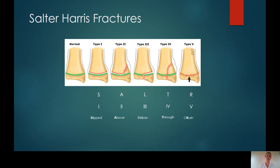Type 3, L, is a fracture that occurs below the growth plate involving the epiphysis. A type 4 fracture sees the fracture extending all the way through from the epiphysis through the physis and into the metaphysis. And then type 5 is a crush fracture where the epiphysis is effectively rammed together. When you see a radiograph, just think SALTER and you can work out whether it's type 1, 2, 3, 4 or 5.